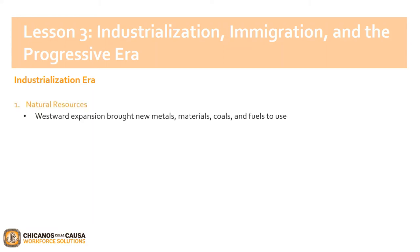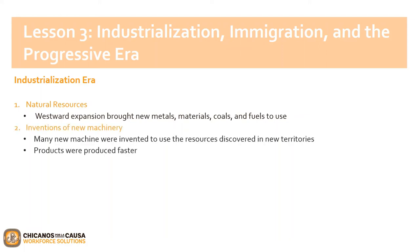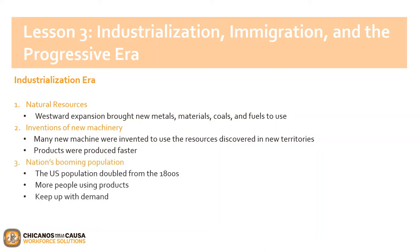There were three major reasons that gave way to the industrialization era. First, natural resources: with westward expansion, the United States discovered new materials for product manufacturing, such as new fuels and metals. Second, new machinery was invented to increase productivity using those resources. And finally, due to the booming population and more people immigrating, more products were needed to keep up with demand.